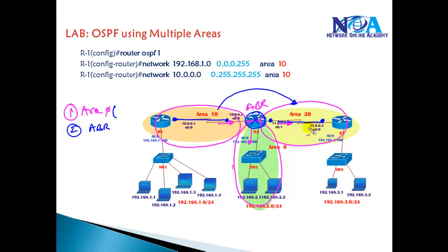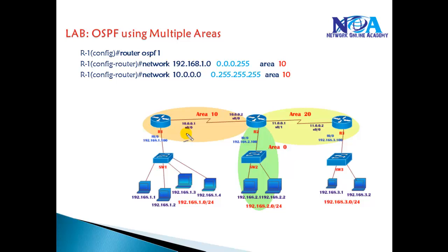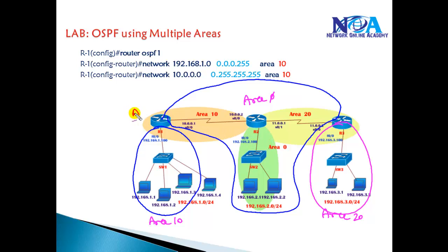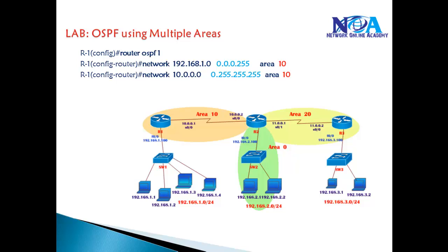If interfaces are not in the same area they will not form neighborship — so these three things we need to keep in mind when designing networks in multiple areas. You can also design an alternative topology where one router has area 0, with other routers in area 10 and area 20. Configuration-wise there is not much difference from the single area case — we still need to address the network and write the wildcard mask. The only difference is we need to specify which interfaces belong to which area number.